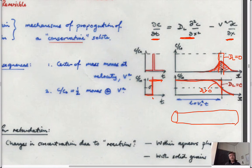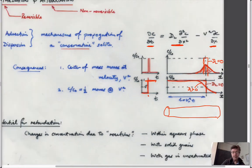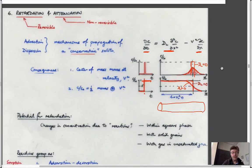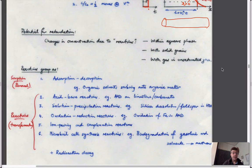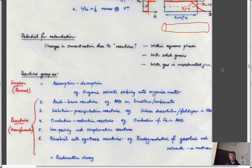What we'd like to do is use these same expressions to represent behavior where we have sorption. We could probably guess what it might look like. The things we're talking about would be straightforward things like adsorption and desorption — when the material in water gets attracted to mineral grains such as organic solvents — and gets sorbed onto the organic matter and is lost from the aqueous phase.